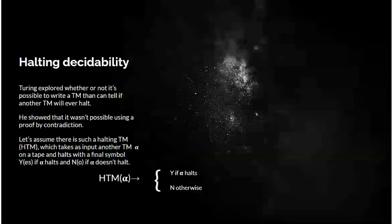Halting decidability was what he was concerned with. He was exploring whether you could write a Turing machine that will determine if another Turing machine will halt. He showed this wasn't actually possible, and he showed it by a proof by contradiction. Let's assume that there exists a halting Turing machine, which we'll call HTM, which takes as input another Turing machine, alpha, on tape, and halts with the final symbol Y if alpha halts, and N for no if it doesn't halt. So we have halting Turing machine takes input alpha and says Y if alpha halts, and N otherwise. Fairly straightforward.